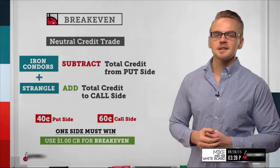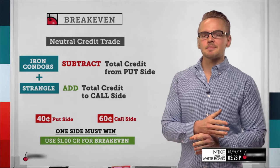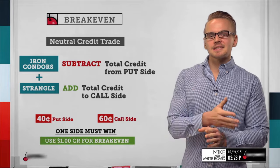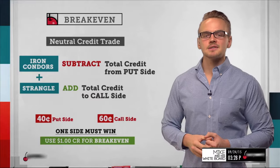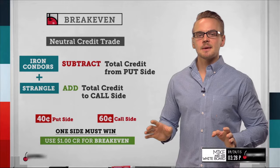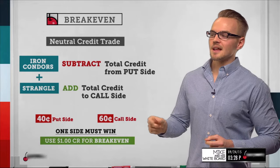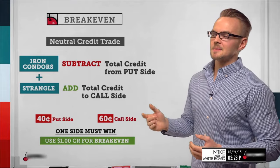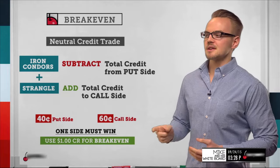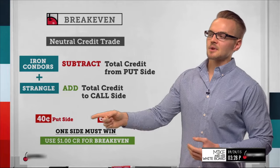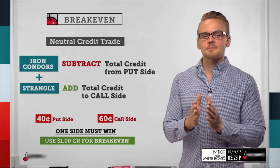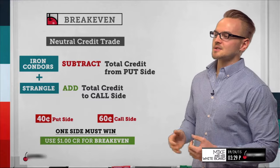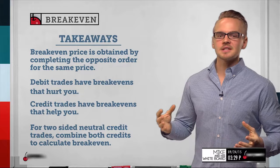Let's break down why that works. I collected $0.40 on the put side and $0.60 on the call side. If the stock goes to $39 — breaching the $40 put by $1 — yes, I see a $0.60 loss on the put side, but since I collected $0.60 on the call side, that offsets the loss. Similarly on the upside, a $0.40 loss on the call side is offset by the $0.40 max winner on the put side. That's why we combine both credits to get the break-even for the overall neutral trade.